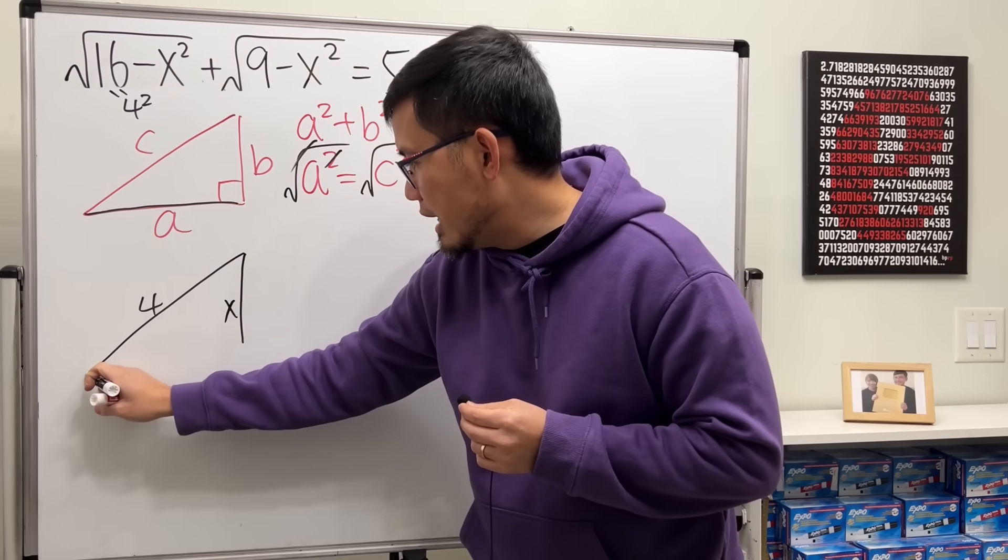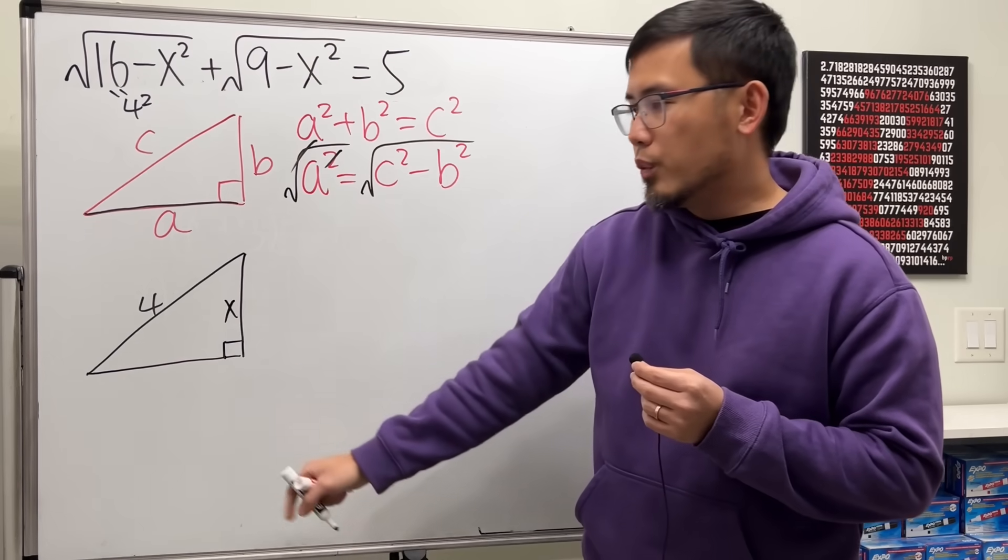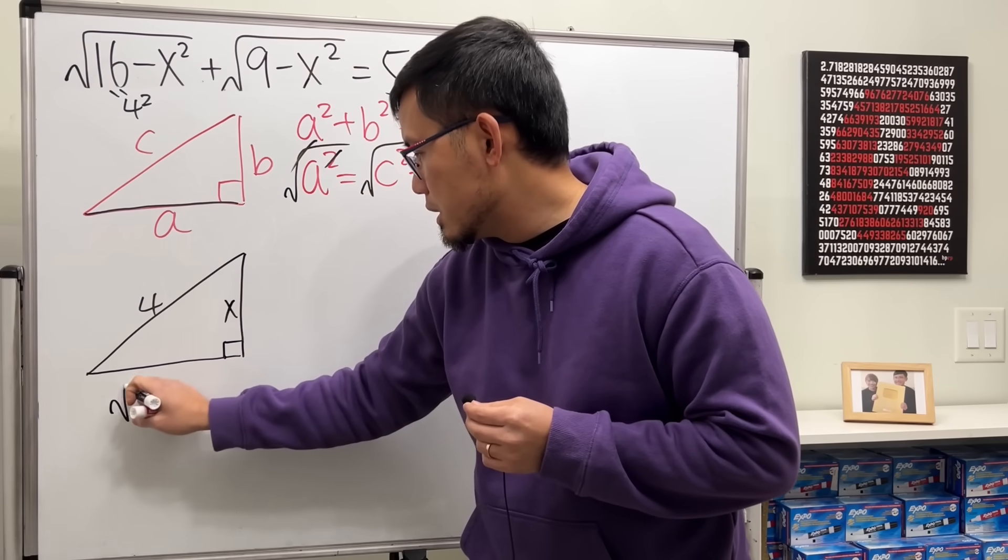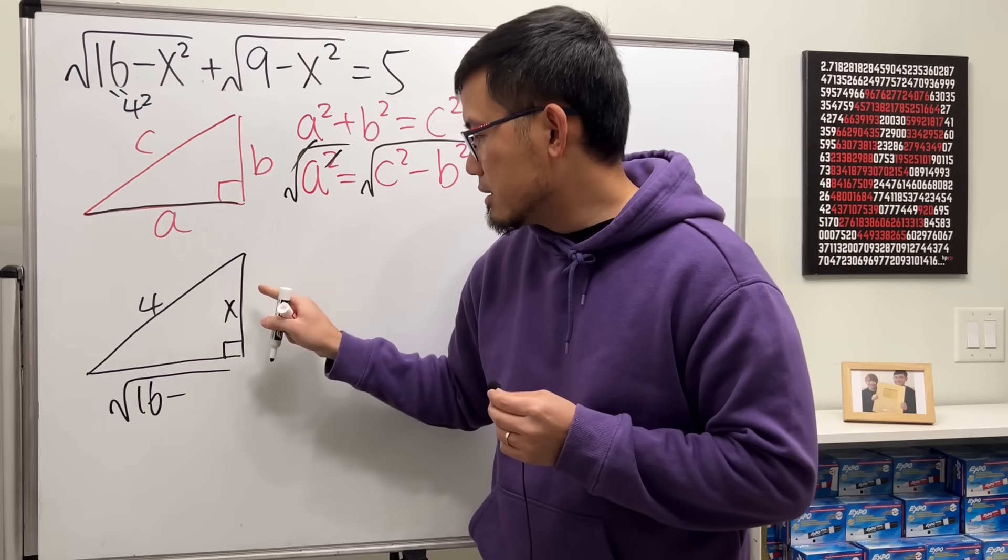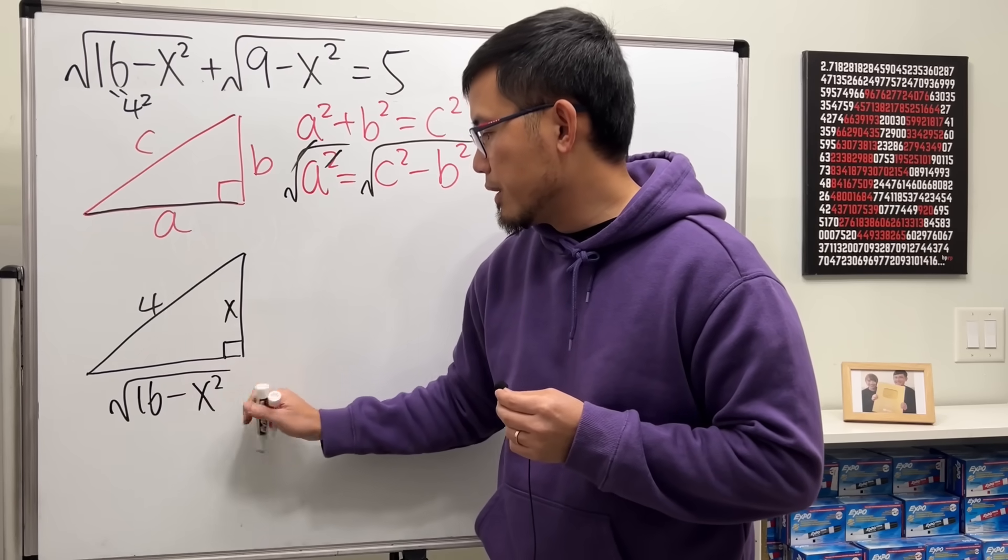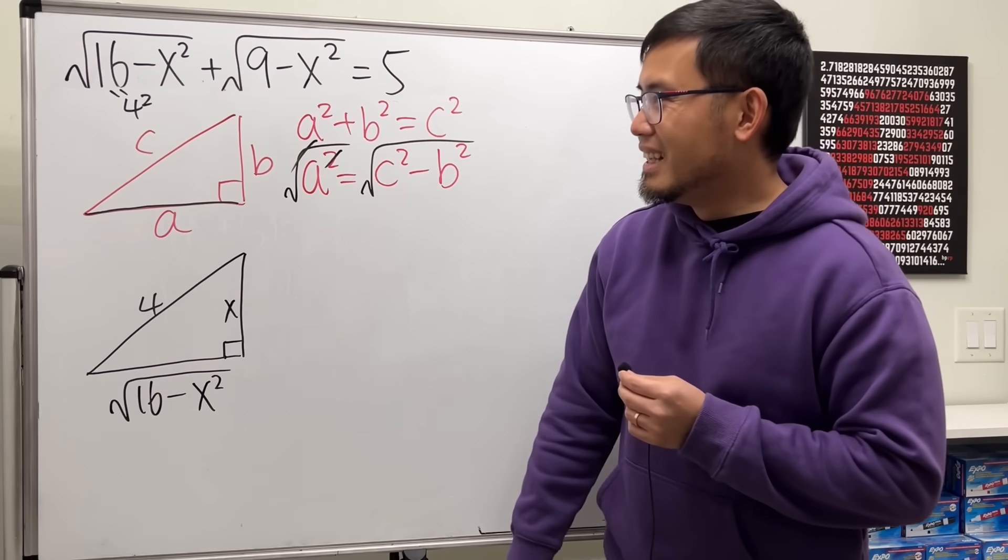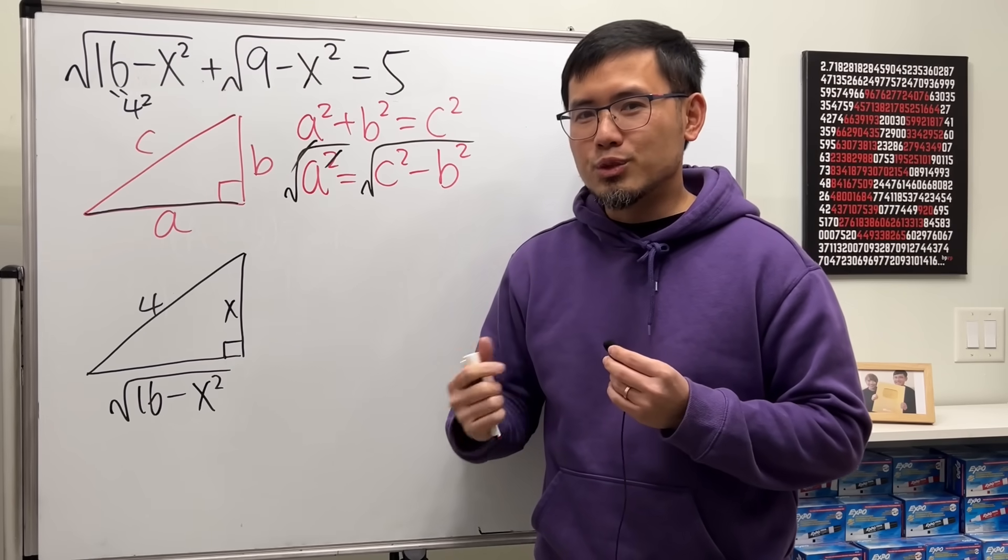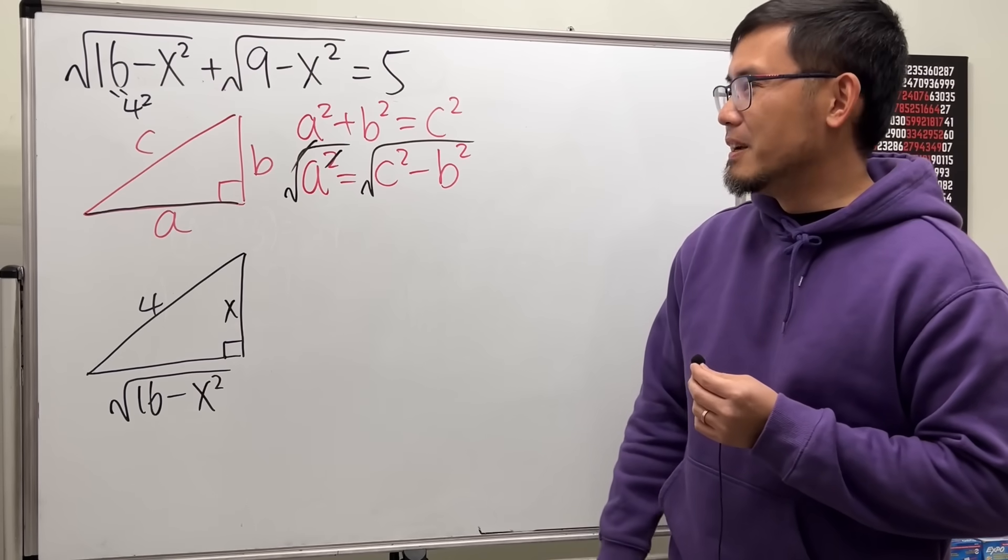And then for the a, well, because we have a right triangle, we know we can just open the square root. Hypotenuse squared, which is 16, and then minus this side squared, which is x squared. So a right triangle from that part. So if you have done some calculus with trick substitution, you'll be like, oh yeah, like that, right?